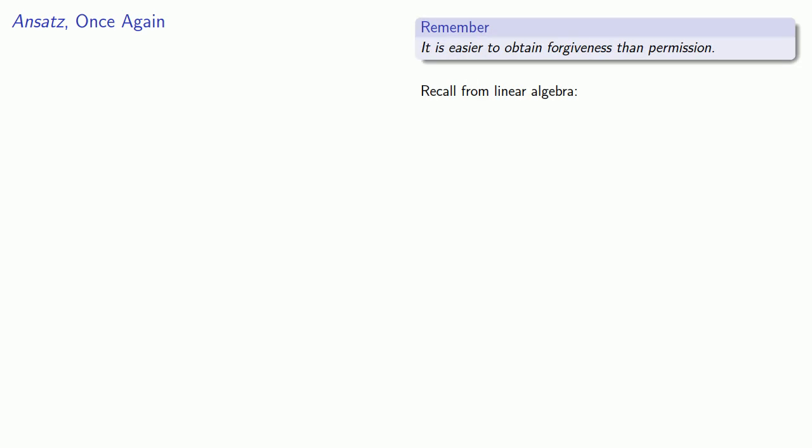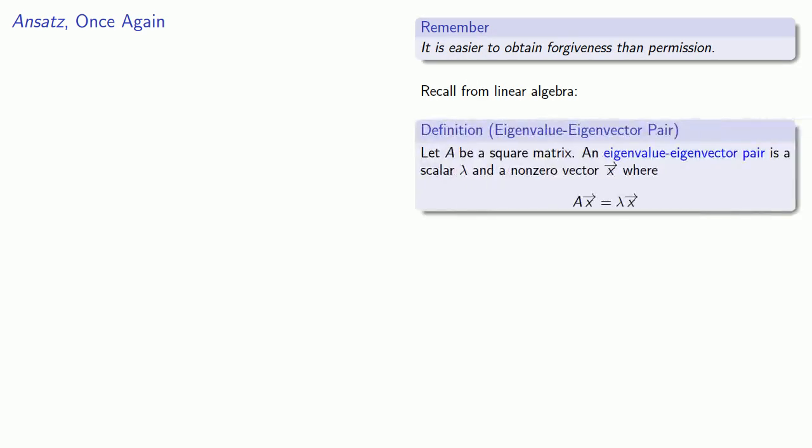And so let's talk ansatz once again. And remember, it's easier to obtain forgiveness than permission. It will be useful to remember the following from linear algebra.